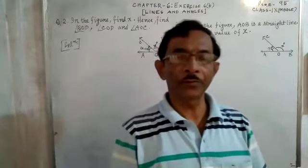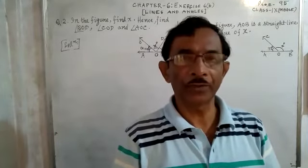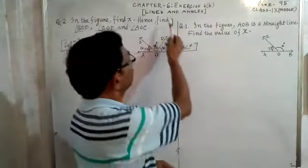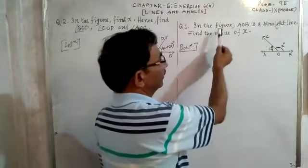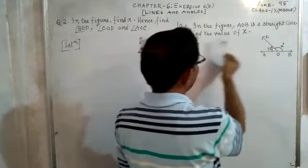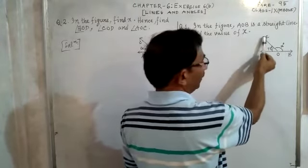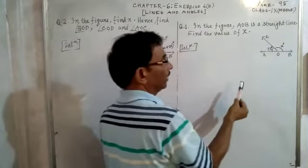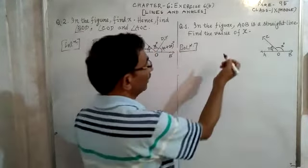Hello my dear students of class 9. Today we will learn the sums from geometry, Exercise 6B, Chapter 6 - Lines and Angles. Look at question number one: in the figure, AOB is a straight line. Angle BOC is given as x degrees and angle AOC is given as 72 degrees. We have to find the value of x.